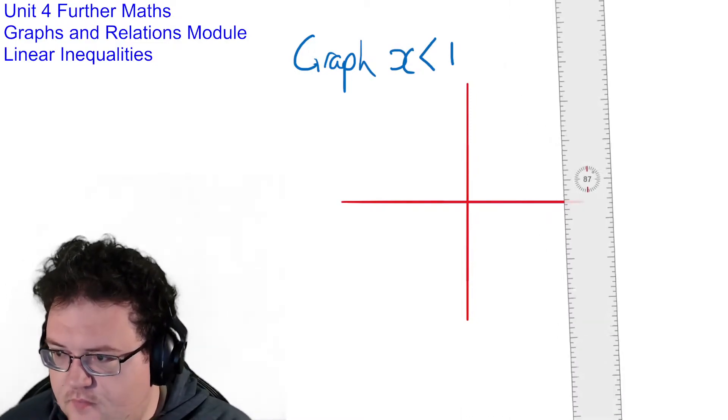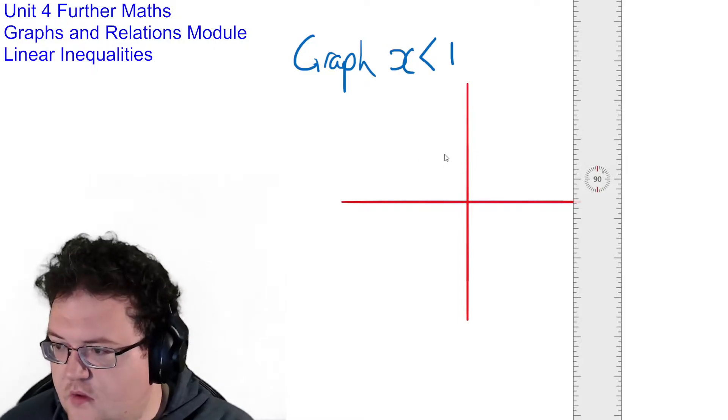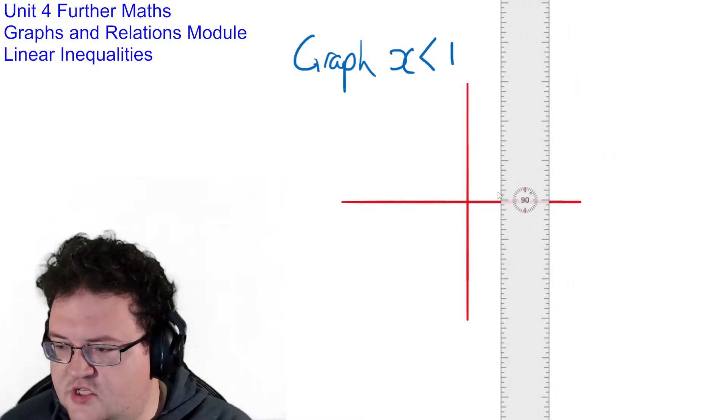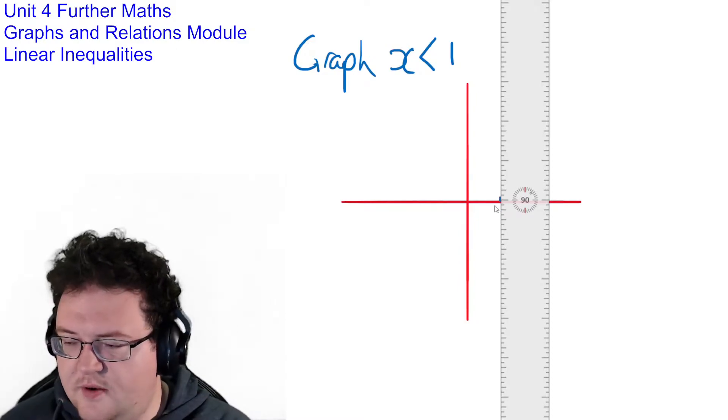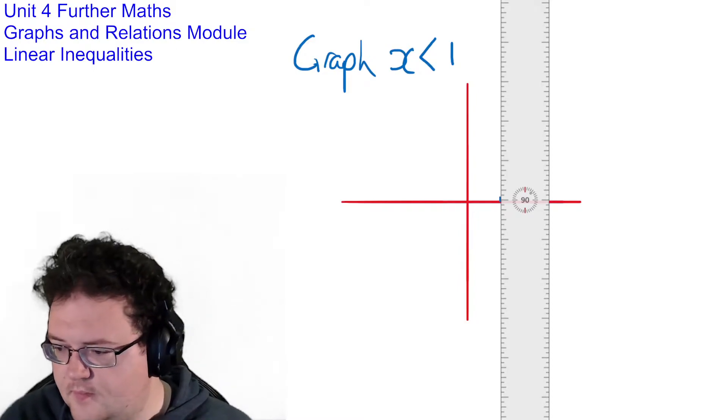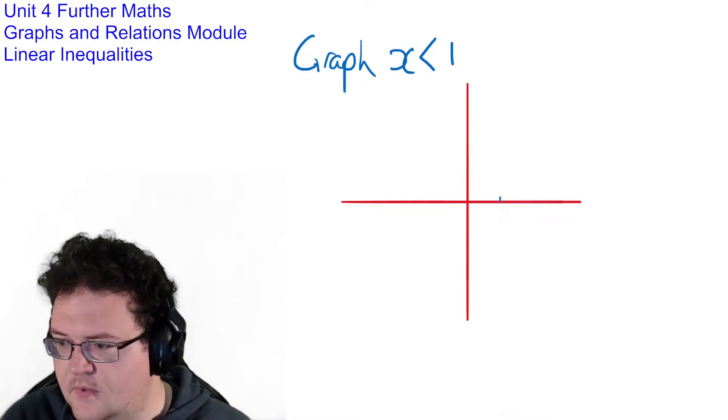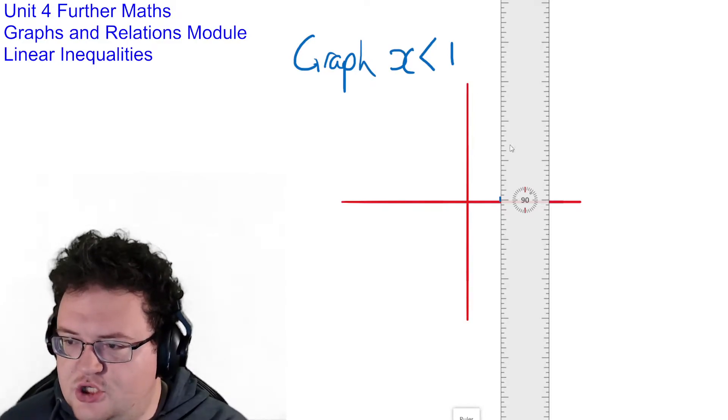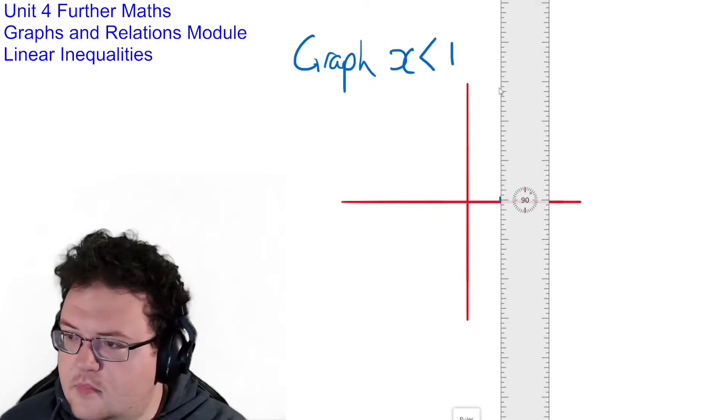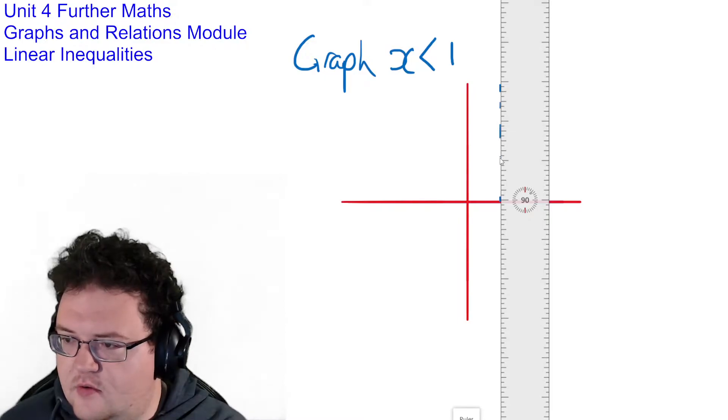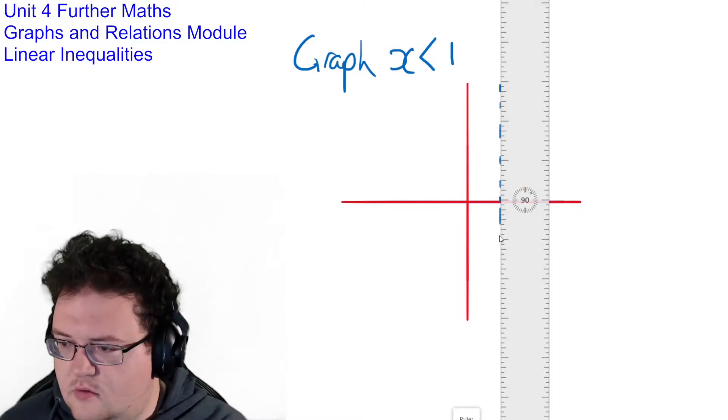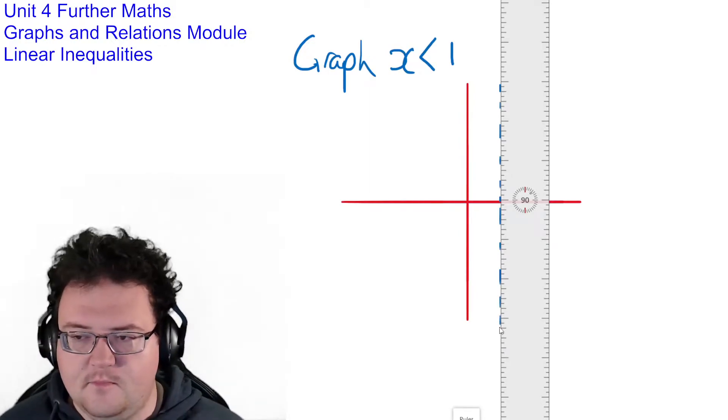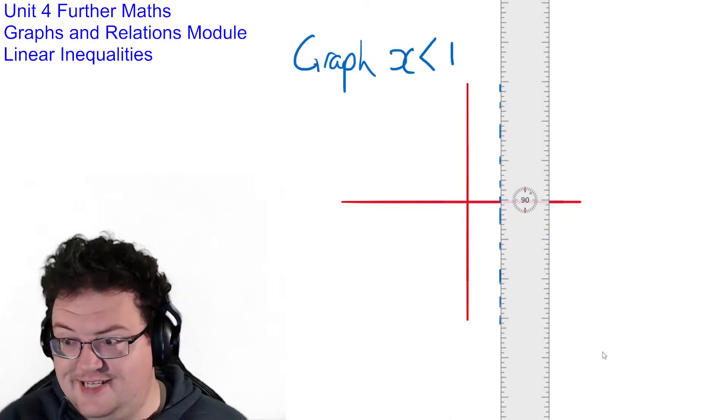So using a ruler we decide where x is 1. And then we are going to put a dotted line all the way up and down where x is 1.